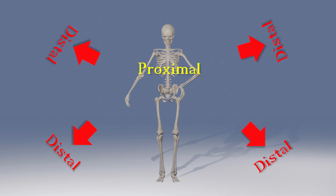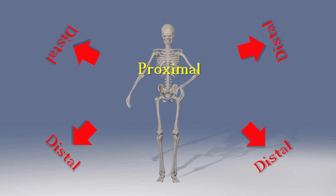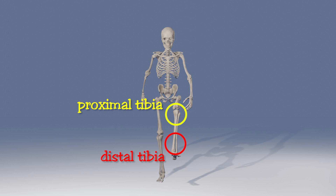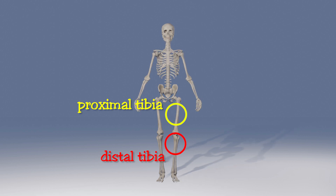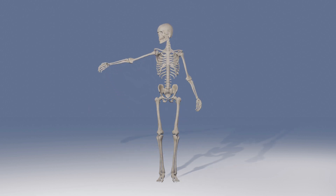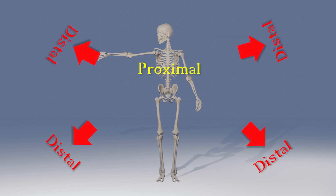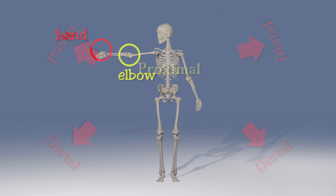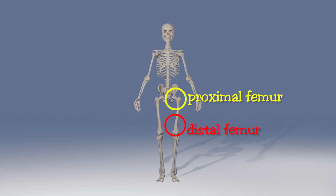Proximal. If something is more proximal, it approximates the main mass of the body. The proximal end of the tibia is the end at the knee. The femur is more proximal than the tibia. The proximal end of the humerus is the end at the shoulder, because this is the end that attaches to the main mass of the body. The opposite of proximal is distal. There is more distance between the distal end of something and the main mass of the body. The hand is more distal than the elbow. The distal end of the femur ends at the knee.